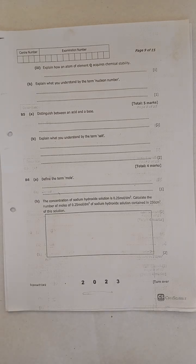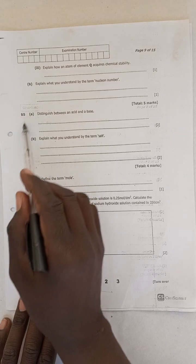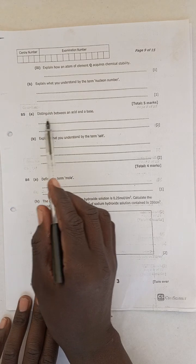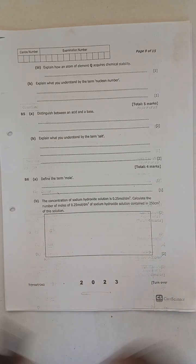So may I get started with 2023 GCE past paper question 5, section B. The first question says distinguish between an acid and a base. First of all, you need to know what an acid is.